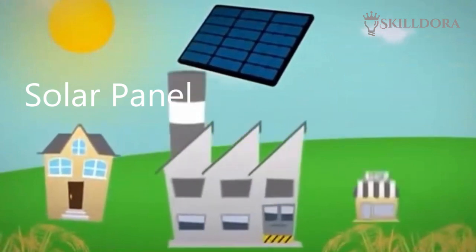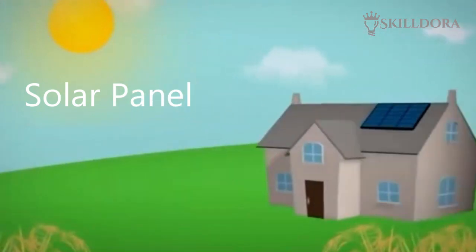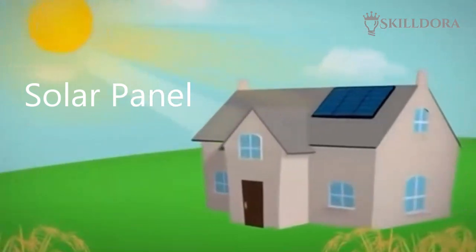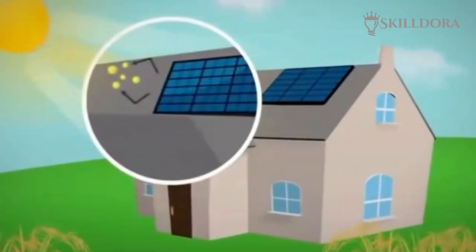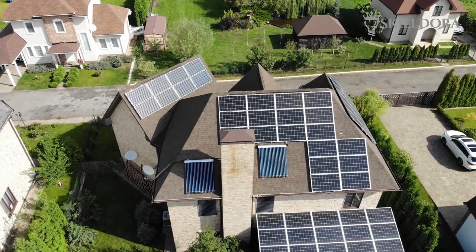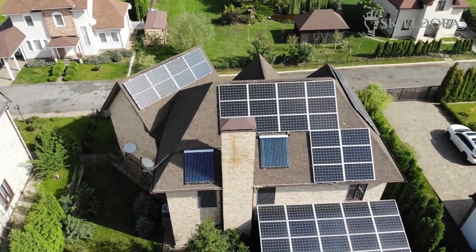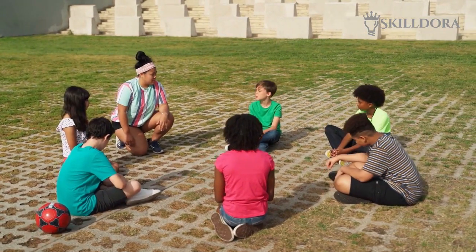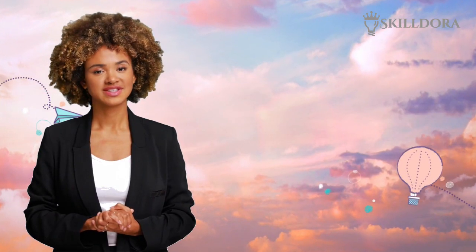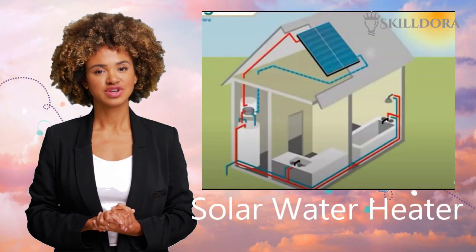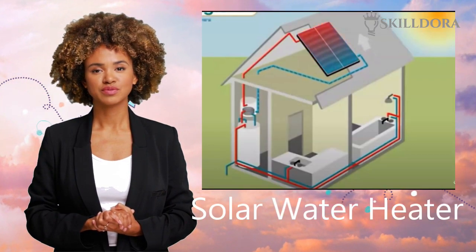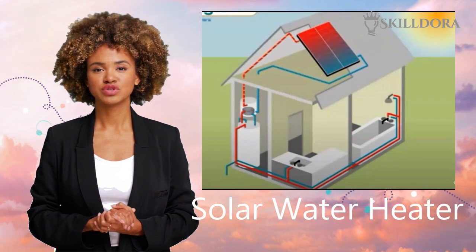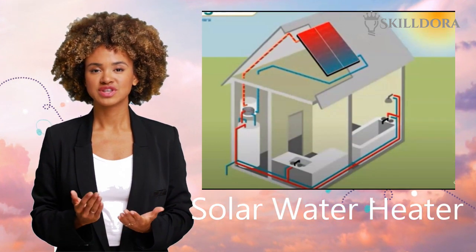A solar panel can be installed on top of a roof or in open spaces like a baseball field or a park, where they absorb sunlight to generate power for homes, schools, and businesses. Another solar energy capture device is a solar water heater, and it can be used to heat buildings and homes.